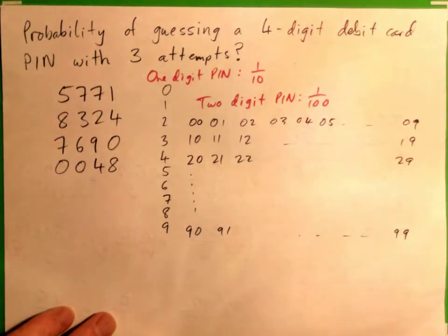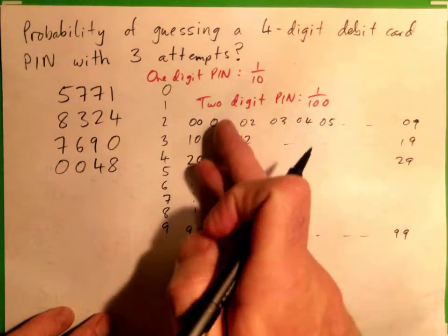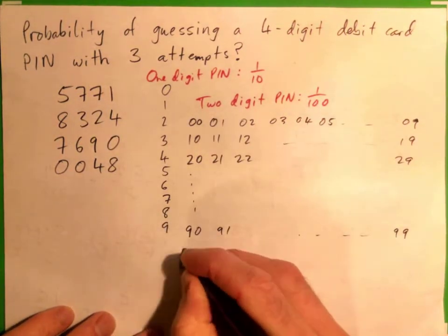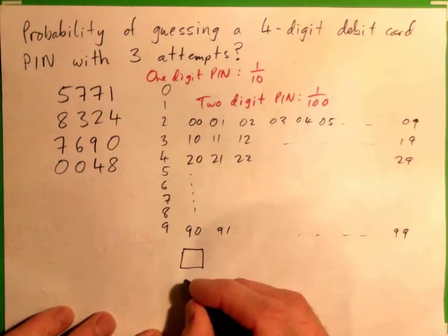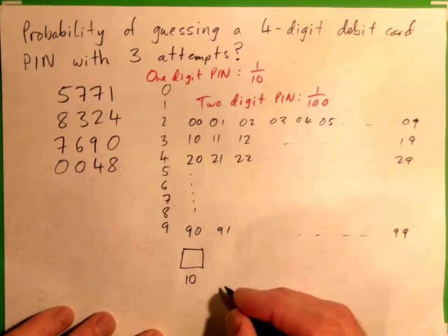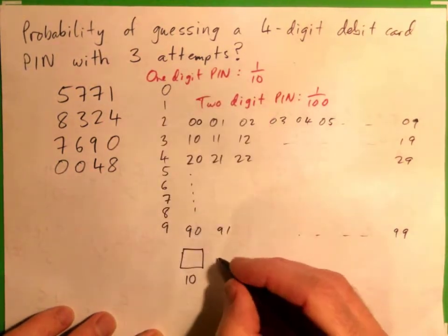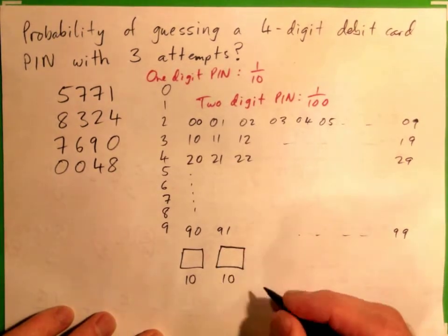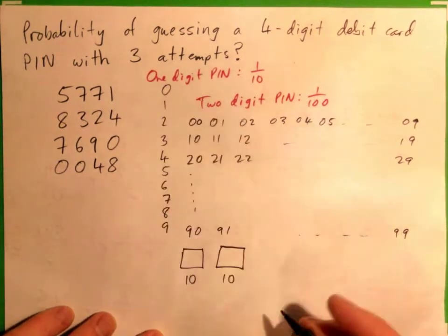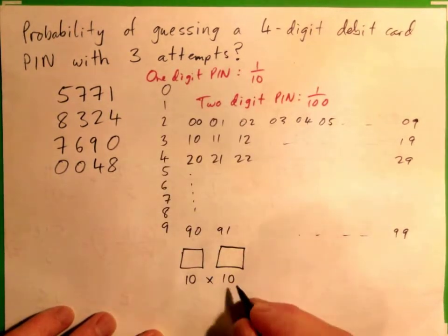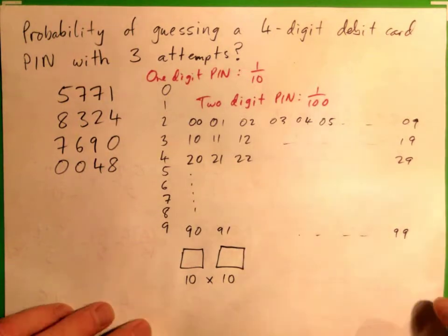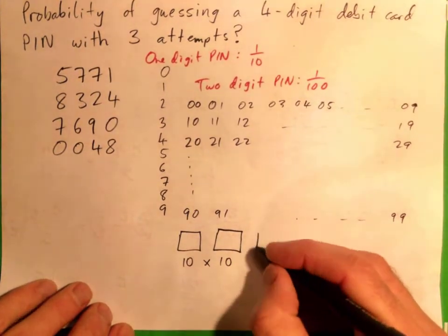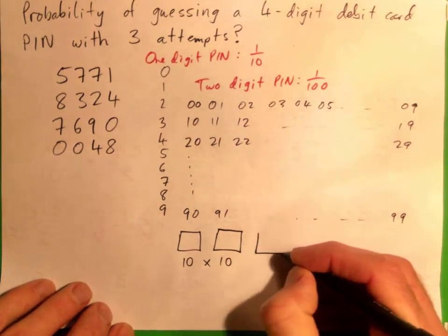The simple way to see this: in the first place there are ten possibilities, digits zero through nine, and in the next spot there are also ten possibilities, zero through nine. Ten times ten equals 100 ways. How about a three-digit PIN? Each of those three digits could also be zero through nine.